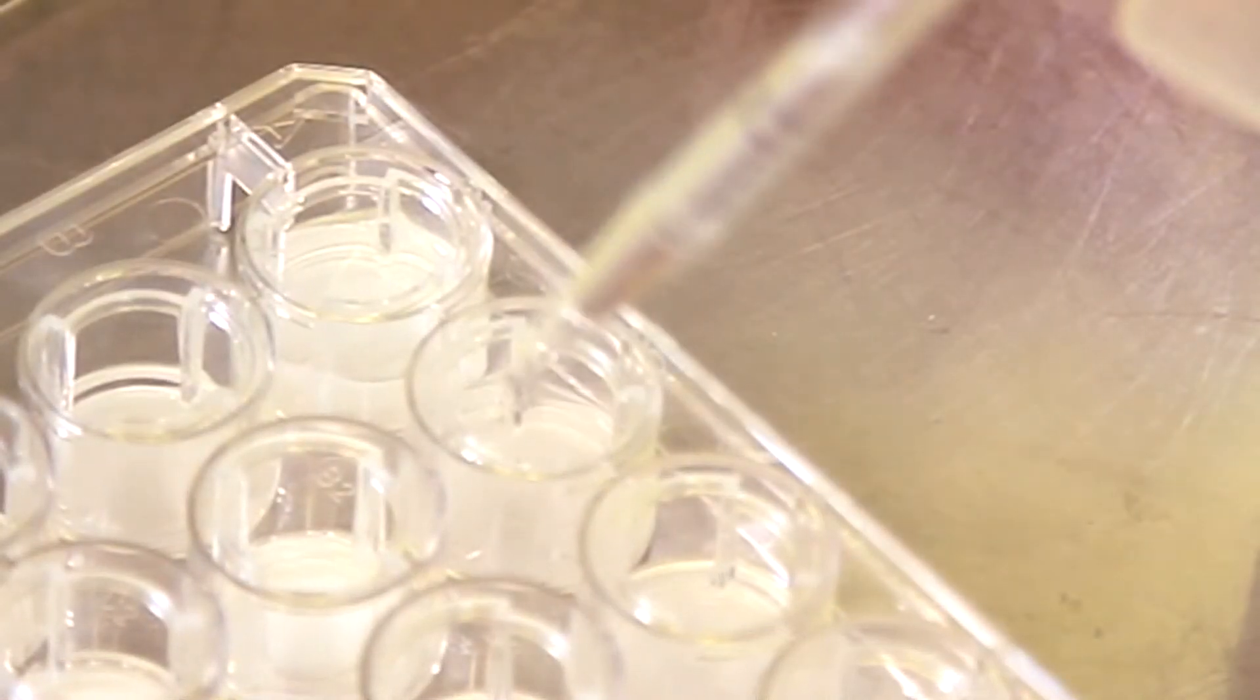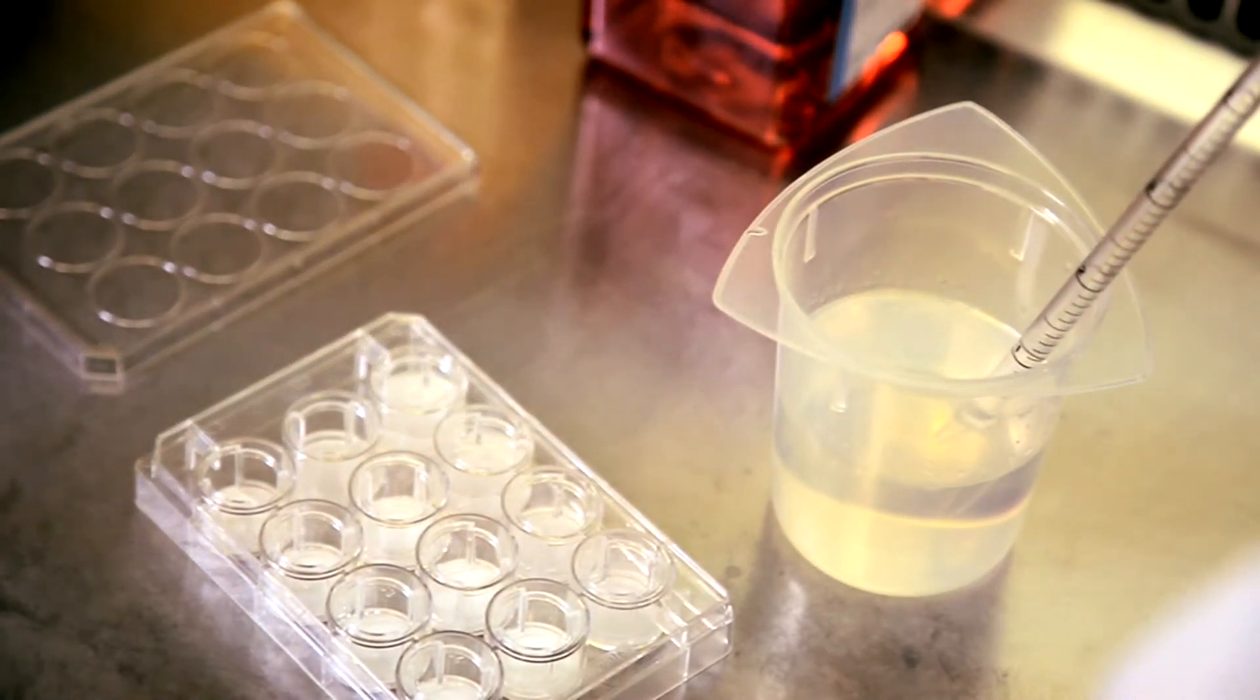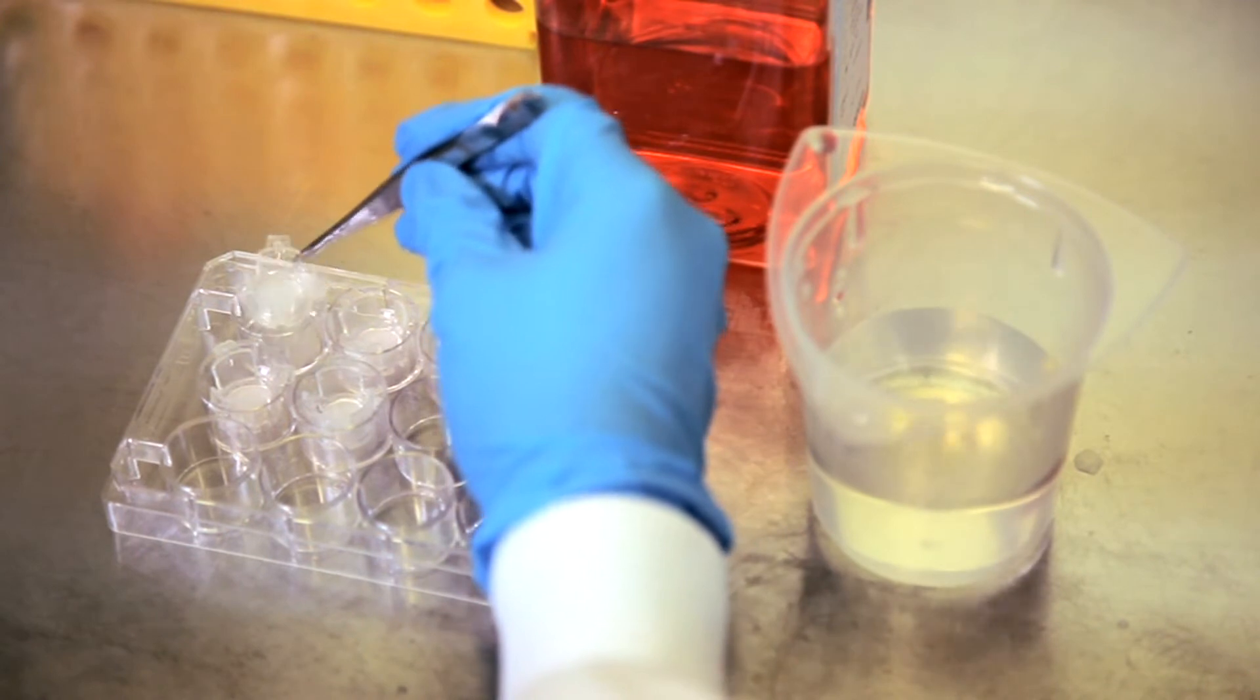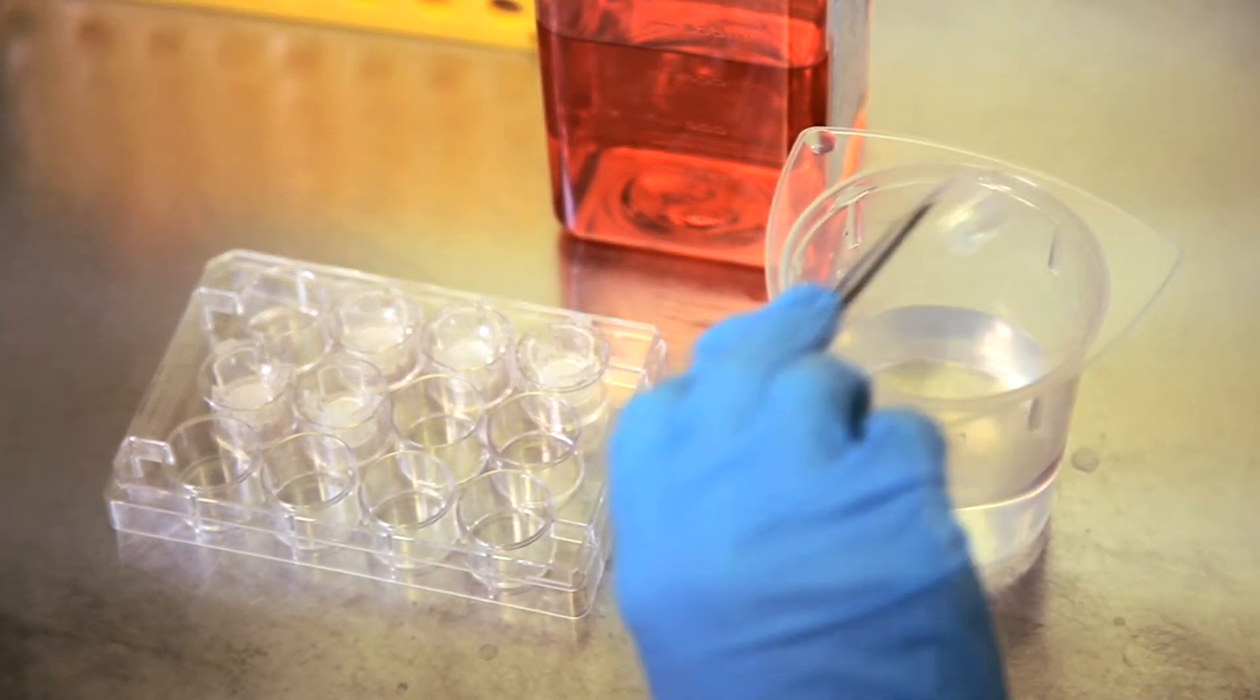When pipetting, you must ensure you add and draw solution from the side of the well so that you don't touch the Alvatex membrane. You can pre-treat well inserts by dipping them into a beaker containing ethanol before placing them in the chosen holder vessel.